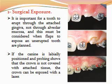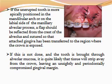Surgical exposure: it is important for a tooth to erupt through the attached gingiva, not through the alveolar mucosa. If the canine is labially positioned and probing shows the crown is not covered with attached tissue, the crown can be exposed with a laser. If the unerupted tooth is more apically positioned in the mandibular arch or on the labial side of the maxillary alveolar process, a flap should be reflected from the crest of the alveolus and sutured so that attached gingiva is transferred to the region where the crown is exposed.